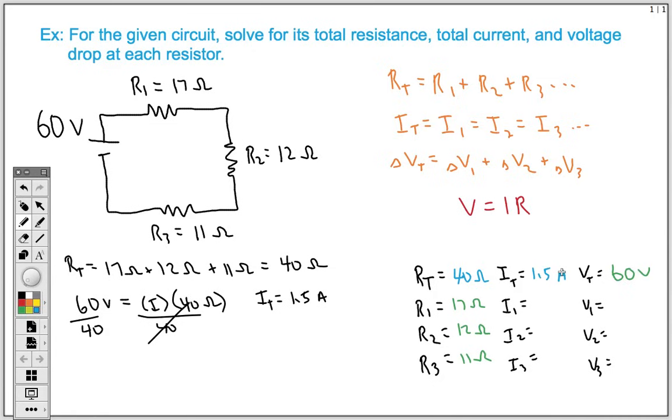Now that we know the total current, let's go back to our rule, which states that the current at every single place is the same. So if my total current is 1.5, well, my current at the first resistor also has to be 1.5. So we can fill in all of these because the current is the same at every single position.